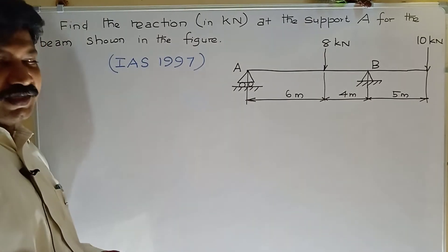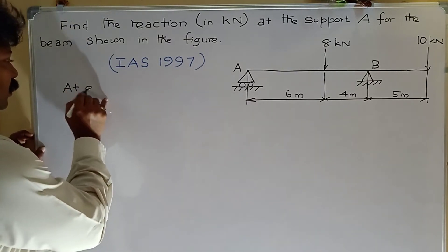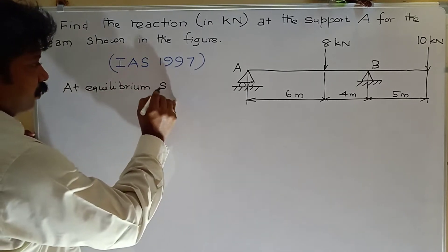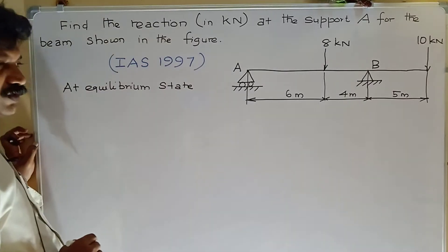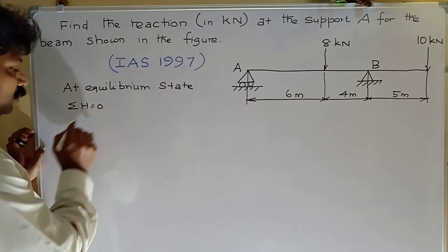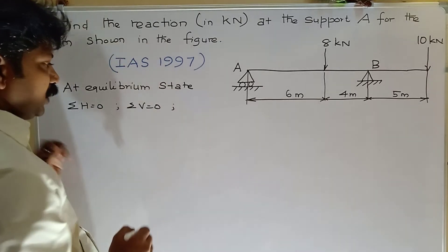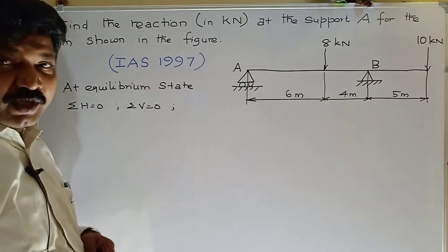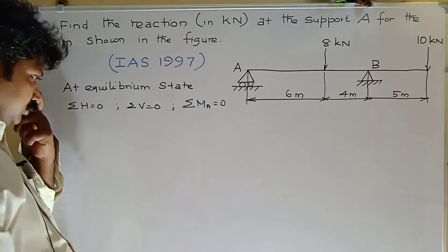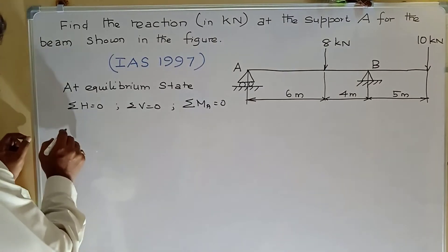Beam AB is in equilibrium condition. At equilibrium state: sigma H equal to zero, sigma V equal to zero, and algebraic sum of moment of all the forces about any one point equal to zero. So sigma MA equal to zero.